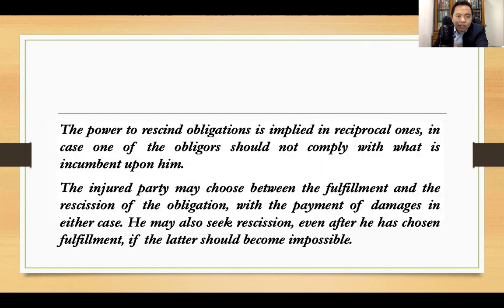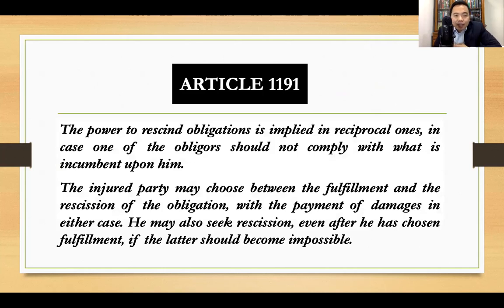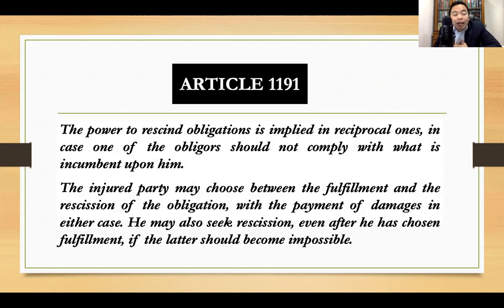He may also seek rescission even after he has chosen fulfillment if the latter should become impossible. The court shall decree the rescission claimed unless there be a just cause authorizing the fixing of a period. This is understood to be without prejudice to the rights of third persons who have acquired the thing in accordance with Articles 1385, 1388, and the Mortgage Law. Article 1191 talks about the power to rescind in case of reciprocal obligation. When you say reciprocal obligation, both parties will have to perform their own part or prestation of the contract.